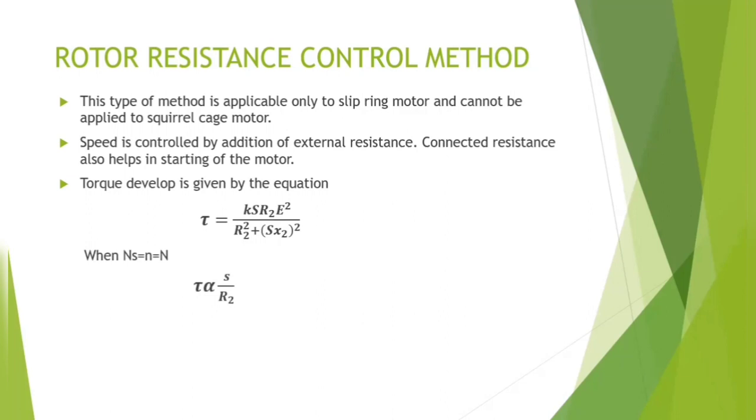When the condition at synchronous speed equals the rotor speed, the slip is very small and we can then neglect X2. The equation becomes torque proportional to slip divided by R2.